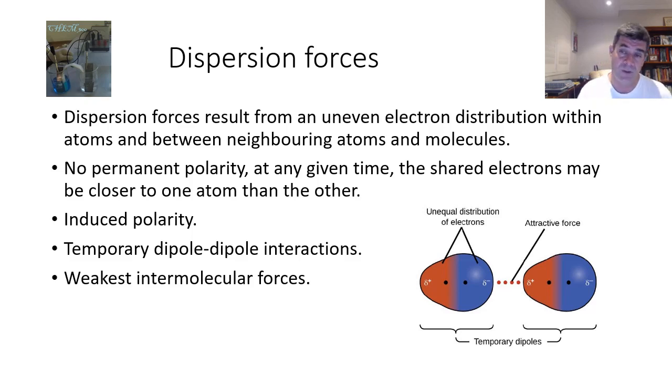Not as strong are dispersion forces. And these result from an uneven electron distribution within atoms without any permanent polarity. So these are temporary dipoles. Consider that the electrons are actually moving, two electrons for a bond that are moving backwards and forwards into and out of the regions of influence of the two atoms that are sharing those electrons. At any point, the electrons will be a little closer to one atom than the other.